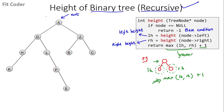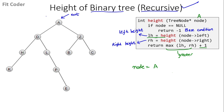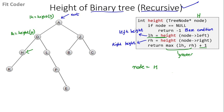The first call is for node A. To calculate the left height, we call height with A's left child D. At D, we check if D is null, then call height with D's left child H to get LH for D. At H, we call height with H's left child K. At K, we call height with K's left child, which is null.